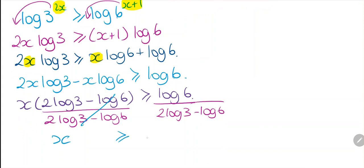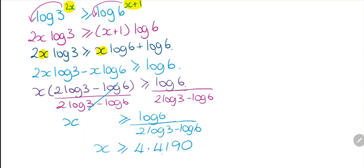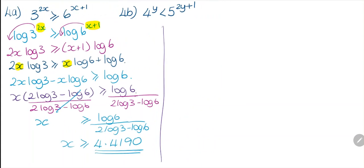These cancel, so x is greater than or equal to log 6 divided by (2 log 3 minus log 6). Putting that in the calculator, x is going to be greater than or equal to 4.4190. Now let's look at question 4b.